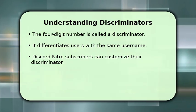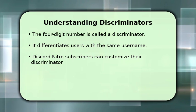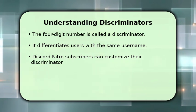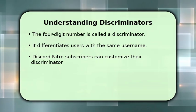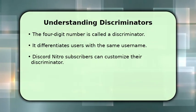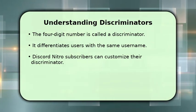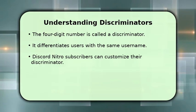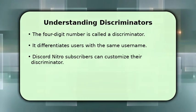It's crucial because it allows multiple users to have the same username while still maintaining unique identities. For instance, there could be many John users, but only one Johnhash1234. While Discord Nitro subscribers can choose their discriminator, free users are assigned one randomly.